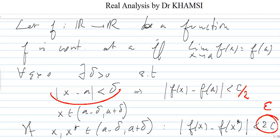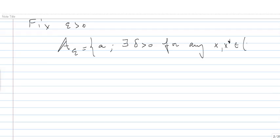So this brings me to the following set for the function f. Fix epsilon, and consider A_epsilon, which is the set of A such that there exists delta positive, such that for all x, x star in (A - delta, A + delta), we have |f(x) - f(x*)| < epsilon.